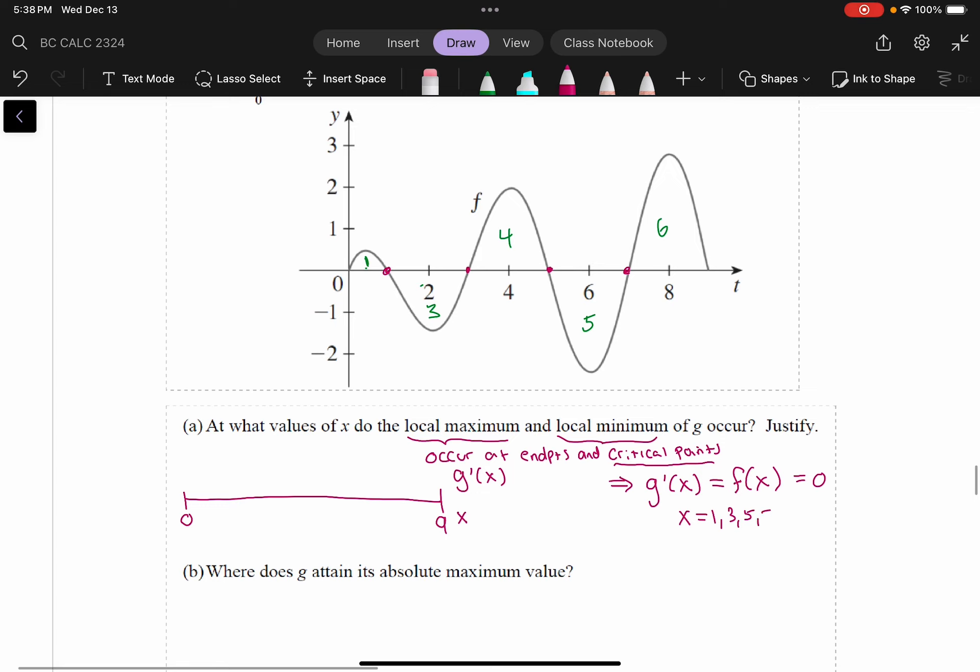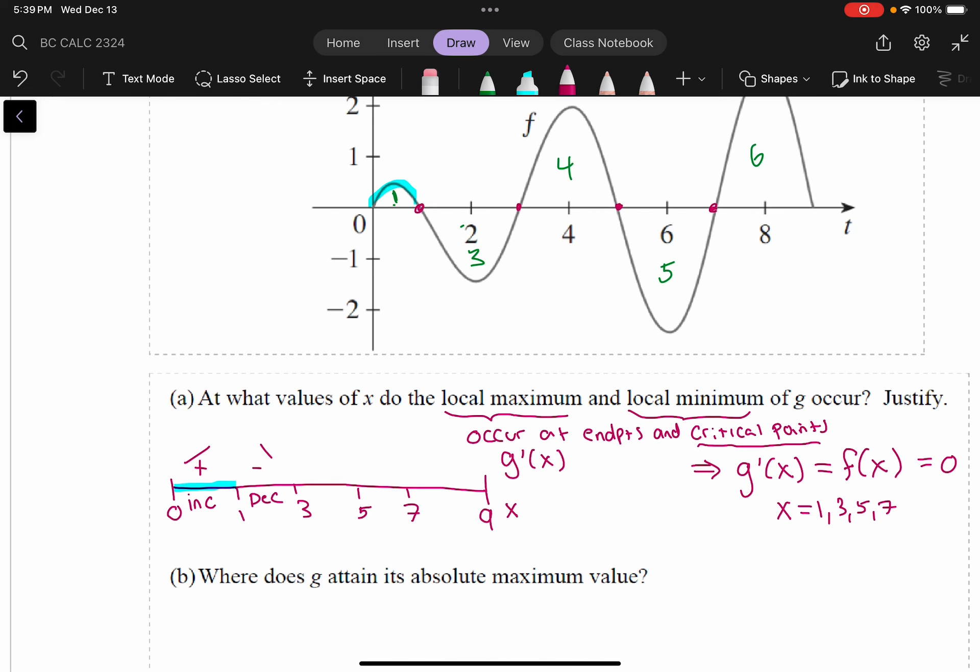I'll put those on our number line, 1, 3, 5, and 7. Now let's check the regions in between. Between 0 and 1, g prime, which is f, is positive. So I'm looking at this section here. That's positive. So that must mean g is increasing. And then between 1 and 3, the derivative is negative, so it's decreasing. And then between 3 and 5, it's positive again, so it's increasing. Between 5 and 7, it's negative, so it's decreasing. Between 7 and 9, it's positive, so it's increasing.